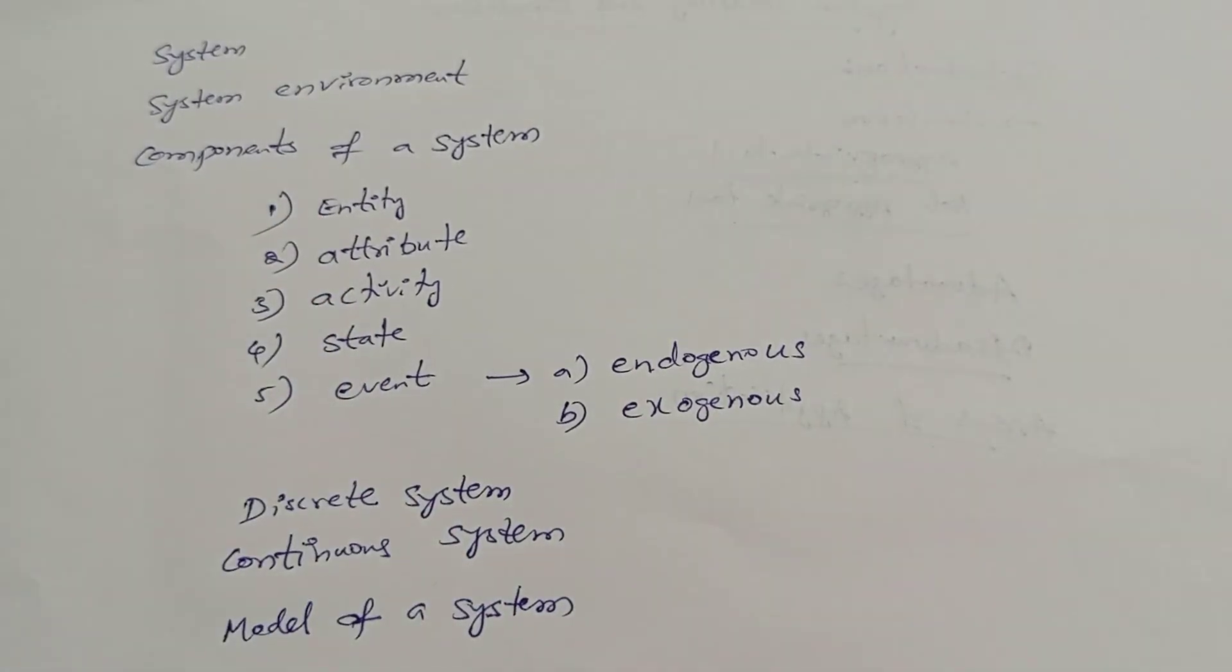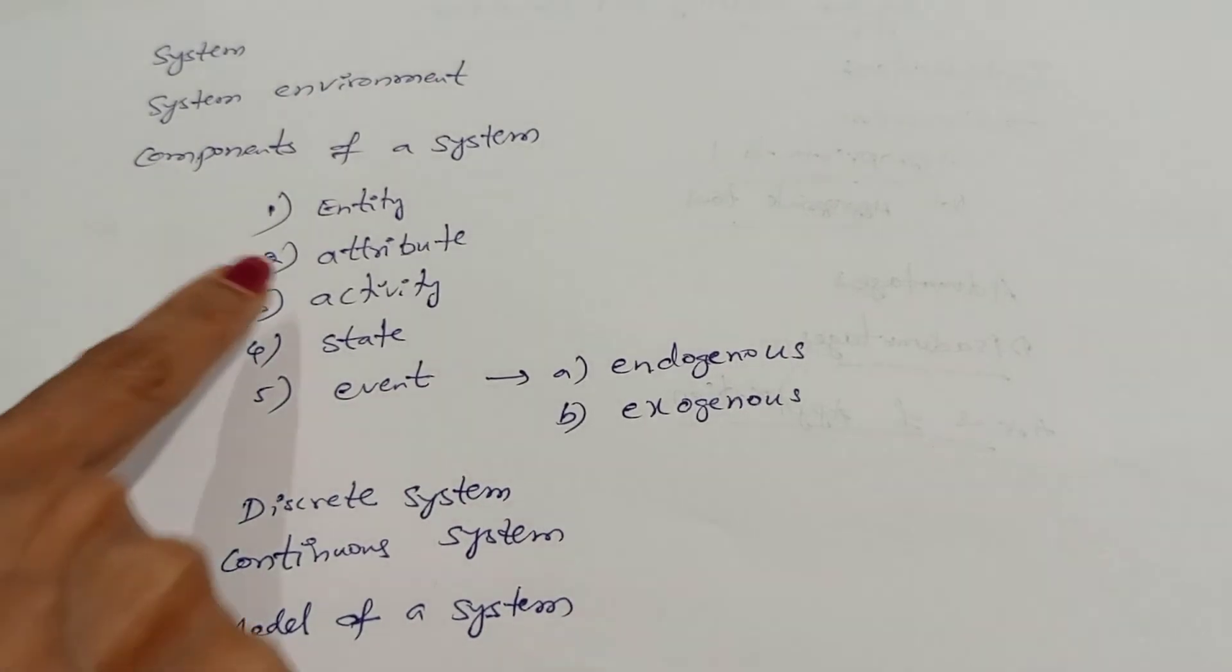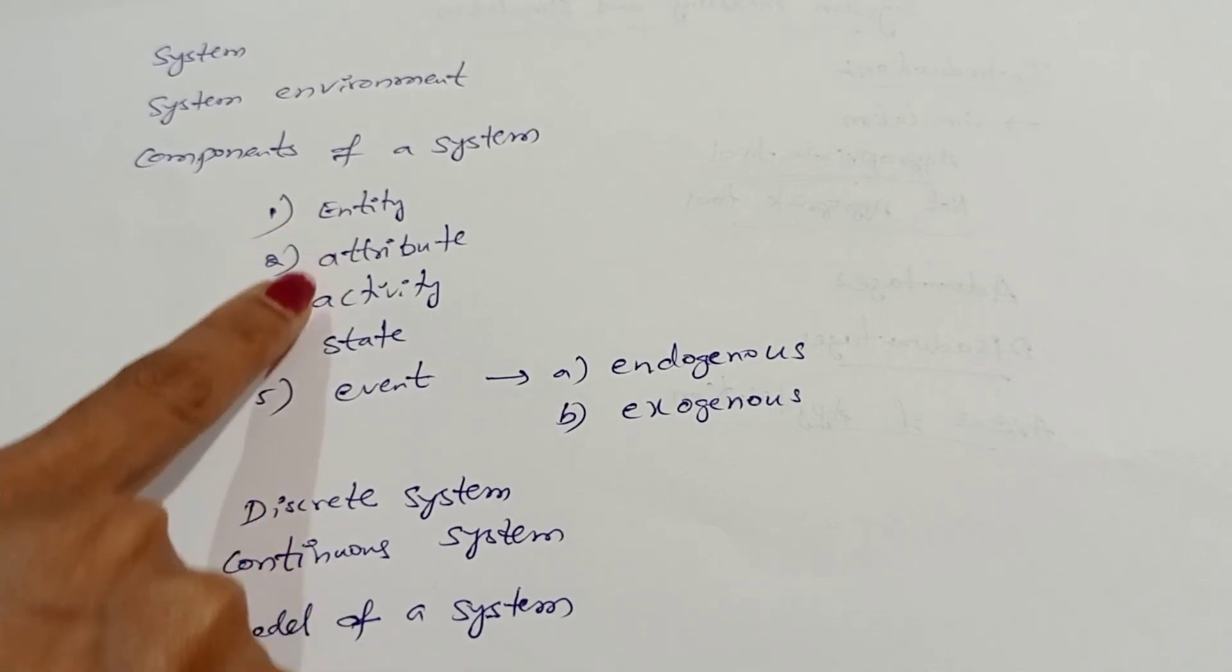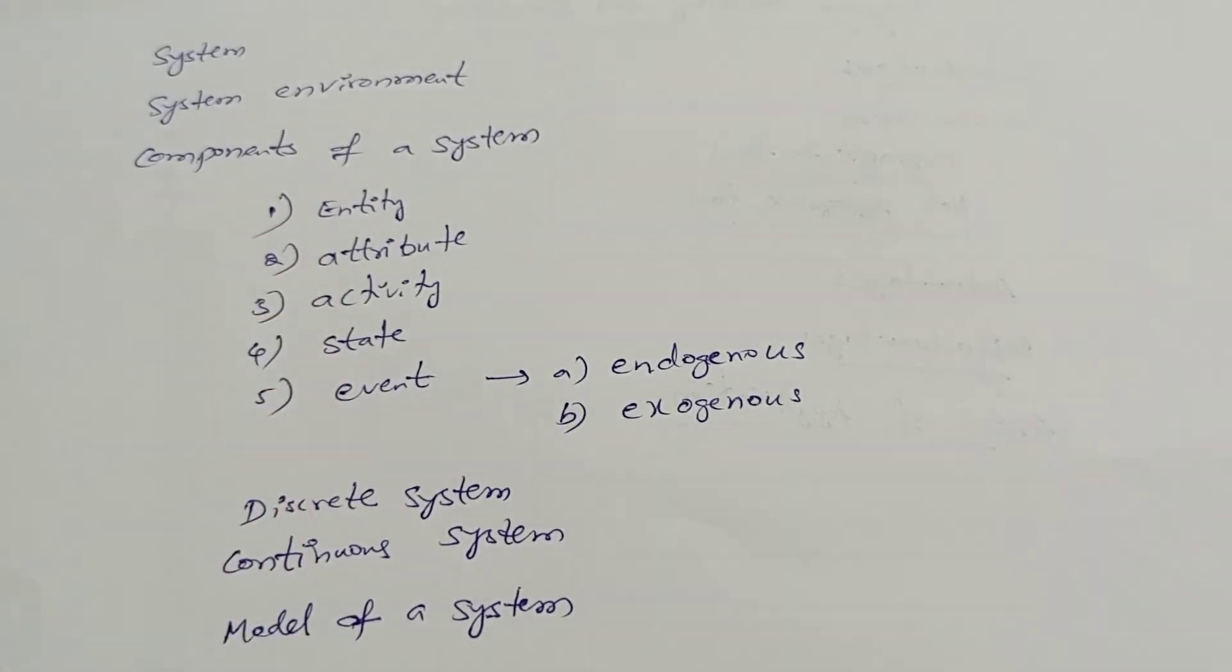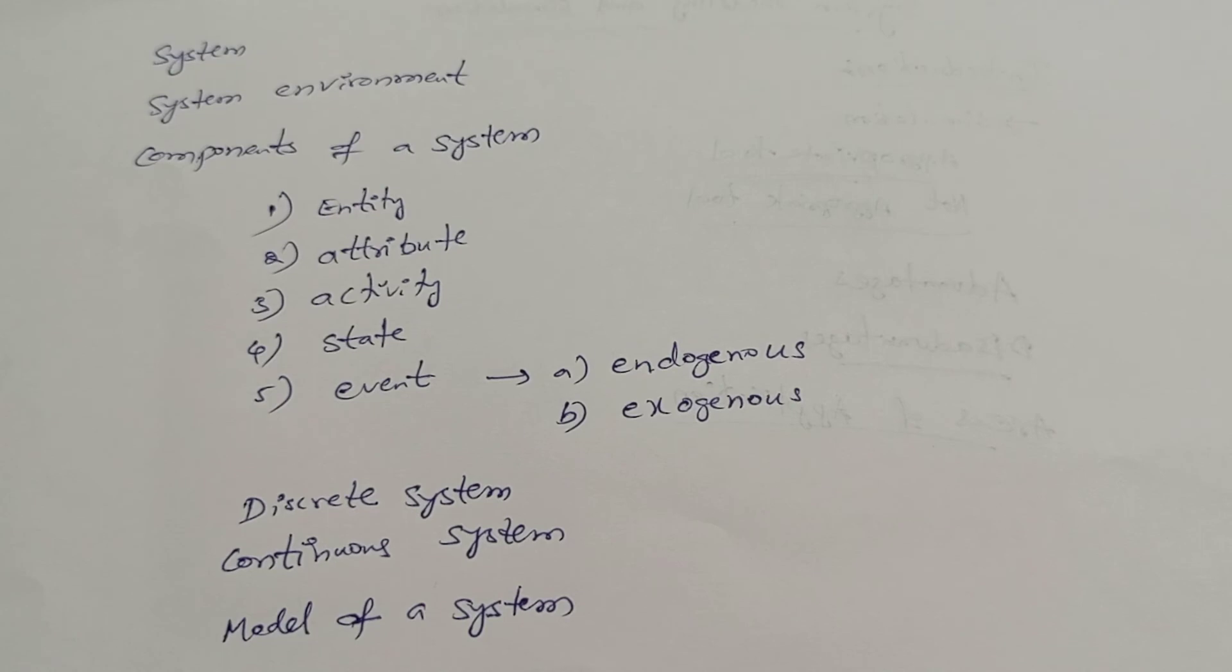These two occurring within your system, inside your system. What is an activity occurring within your system? It represents endogenous.